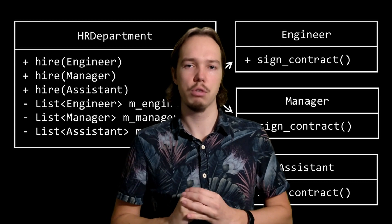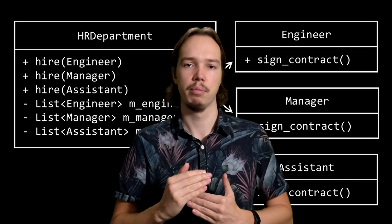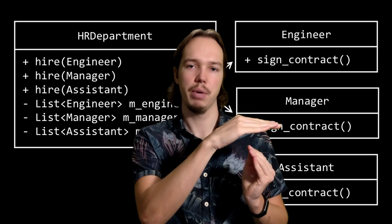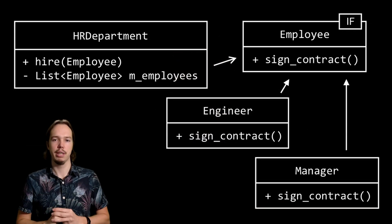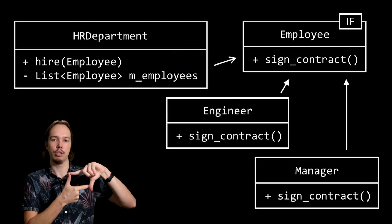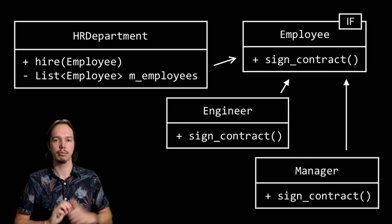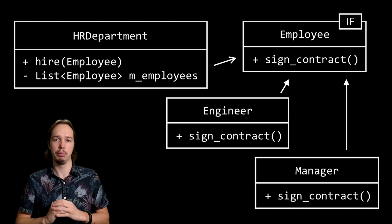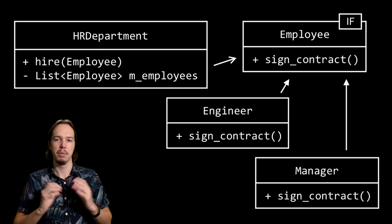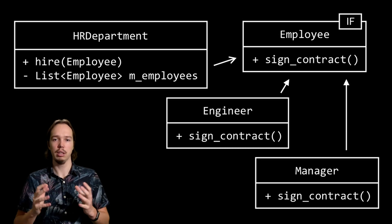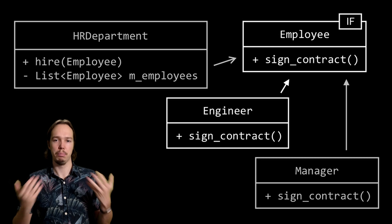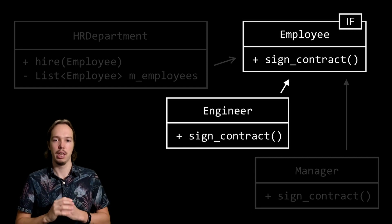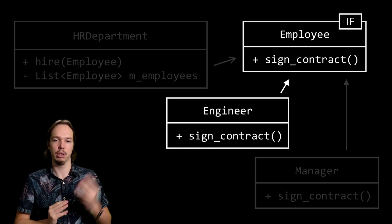Every employee has to sign a contract and then they're added to a list. To solve our violation of the open-close principle, instead of tying ourselves to concrete classes, we are going to introduce an interface that abstracts away the different employee types. You can think of an interface as a contract — it describes a certain kind of behavior, in this case the ability of employees to sign a contract, but it doesn't provide any actual implementation to do so.